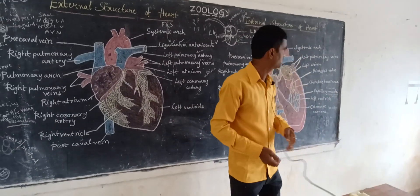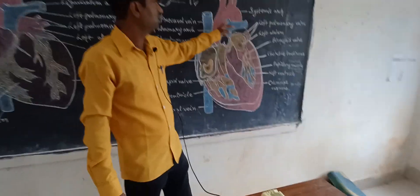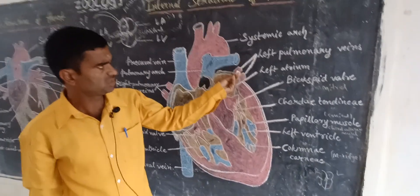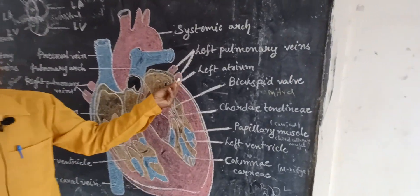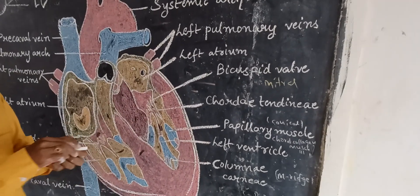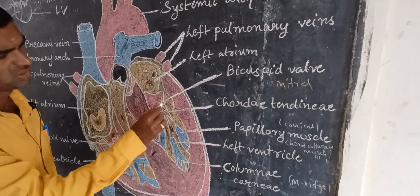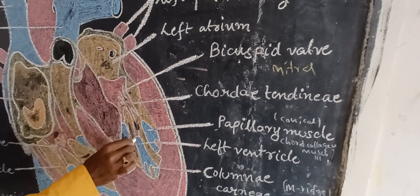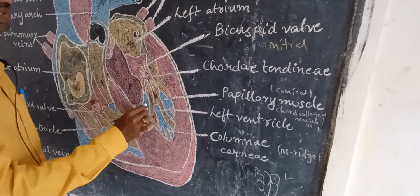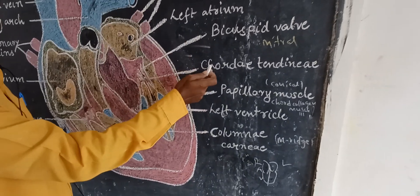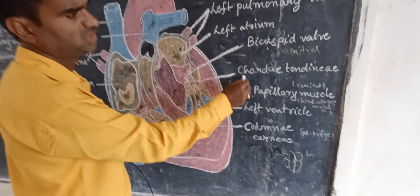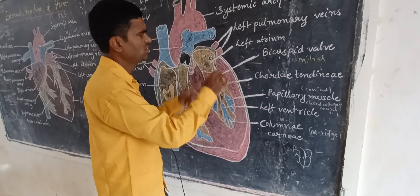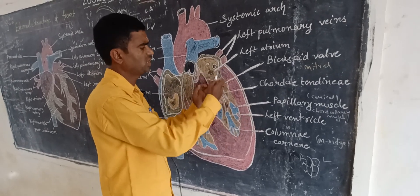Looking at the internal structure of the heart: the systemic arch is present, along with the left pulmonary veins and left atrium. Bicuspid or mitral valves are forming, and through the mitral valve the blood is pumped into the ventricles. Muscular ridges — chordae tendineae — are forming, and papillary muscles are also forming as conical-shaped structures. Blood is reaching the left ventricle with the help of bicuspid valves.